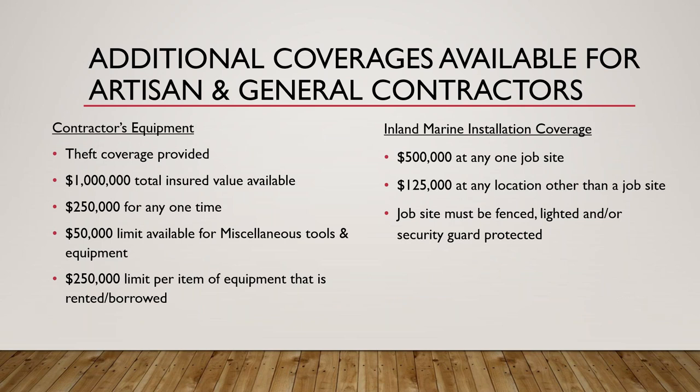Here are some property coverages you may want to offer to your artisan and general contractor clients. The contractor's equipment provides coverage for machinery, equipment, and tools, as well as mobile agricultural machinery and equipment. Some types of equipment include tractors, front-end loaders, bulldozers, drills, miscellaneous small tools, and other mobile equipment. We can go up to $250,000 per item, up to $1 million in one schedule. We can offer $50,000 for miscellaneous tools and equipment, and some coverage for rented and borrowed equipment.